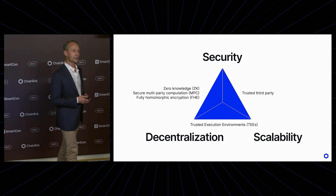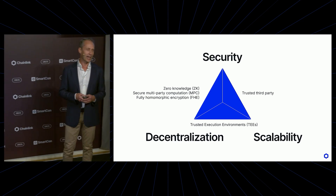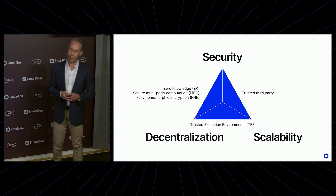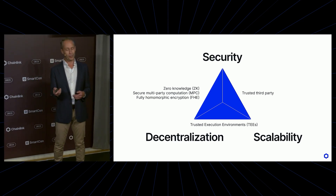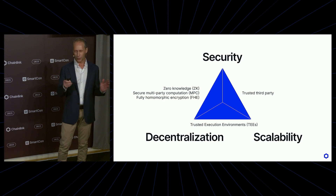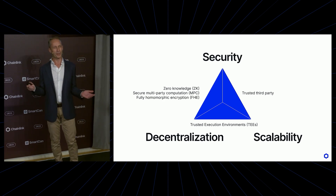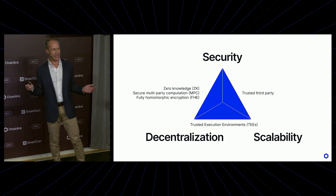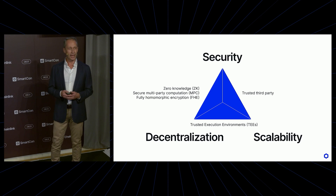On the top left, you have the cryptographic heavyweights — protocols like zero-knowledge, secure multiparty computation, and fully homomorphic encryption. Beautiful pieces of science, beautiful pieces of mathematics. And much progress has been made over the past decade or two.